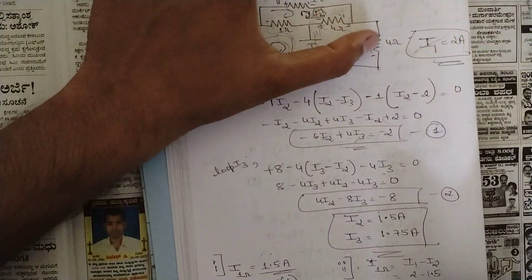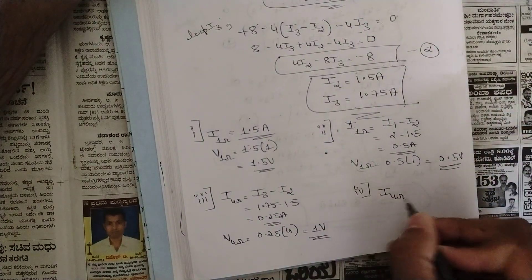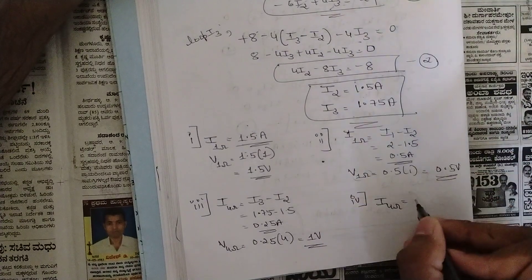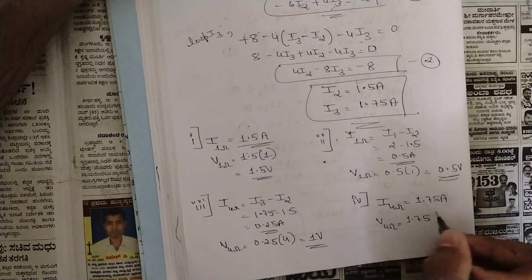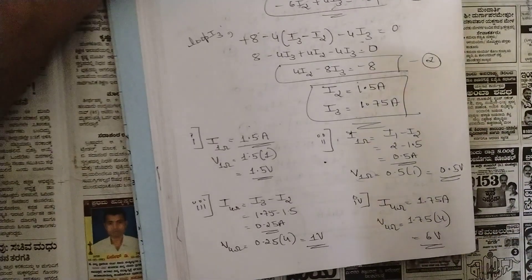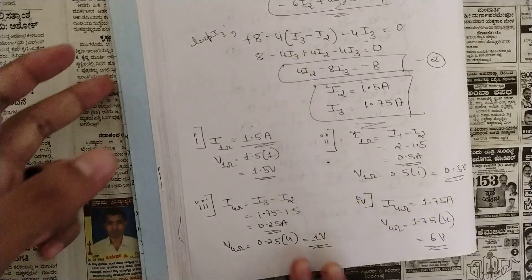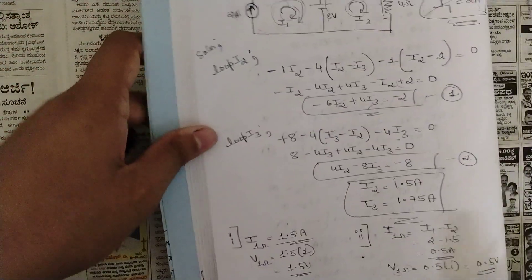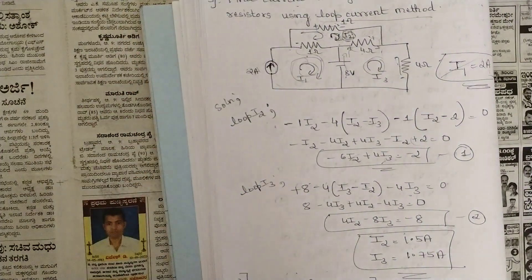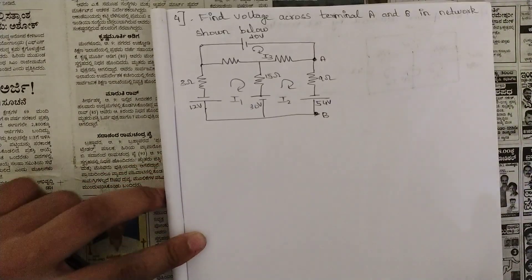For the fourth resistor, the 4-ohm in loop i3 only: current = i3 = 1.75 ampere, and voltage = 1.75 × 4 = 7 volt. All four resistor currents and voltages have now been found using mesh analysis. Pause the video and verify these results yourself.